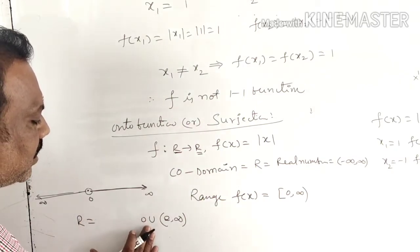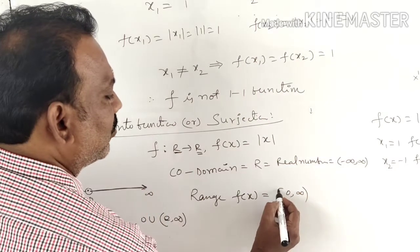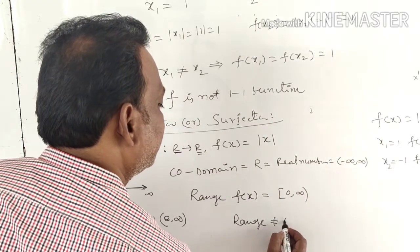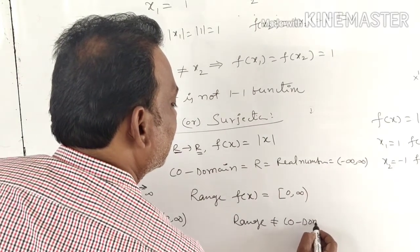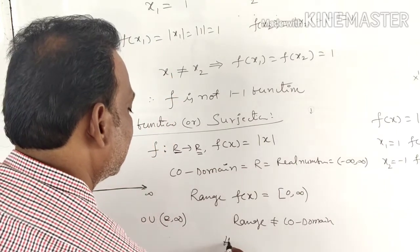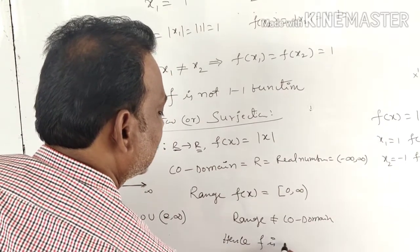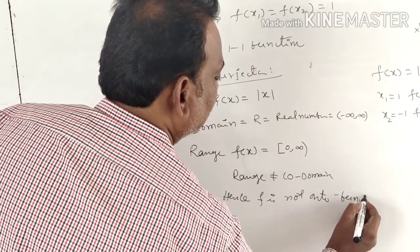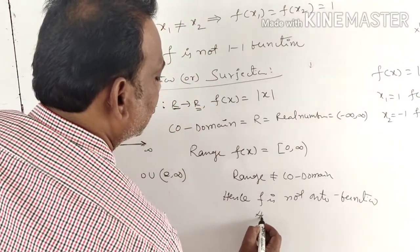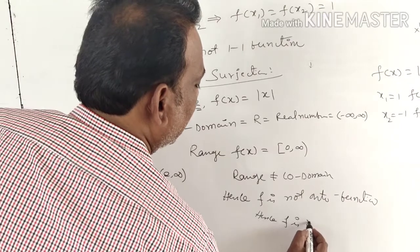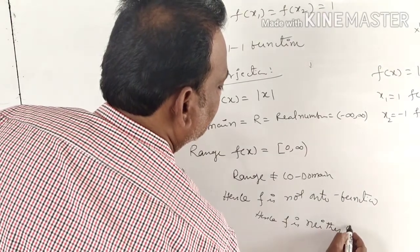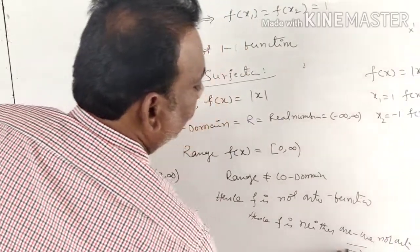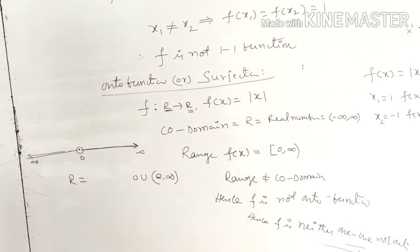The codomain R equals (−∞, 0) ∪ {0} ∪ (0, +∞), which is (−∞, +∞). But range f(x) = [0, +∞). Since range ≠ codomain, f is not an onto function. Therefore f is neither one-one nor onto.